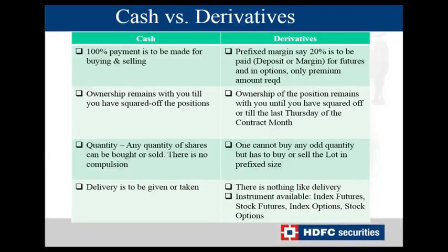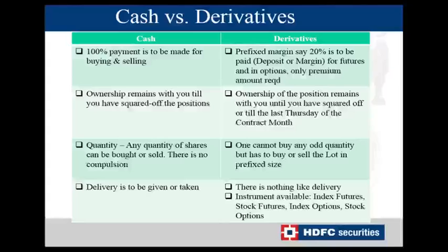Let us understand the basic difference between the cash and derivative markets. In the cash market, to buy or sell anything, 100% margin is always required. But in the derivatives market, we do not require 100% margin — we have a prefixed margin of around 20 to 30% maximum, known as your deposit or margin, applicable for futures. In options, you only require the premium amount. In cash, ownership remains until you square off positions, whereas in derivatives, ownership remains until you square off or until the last Thursday of the contract month.